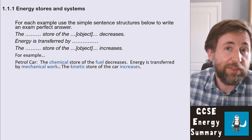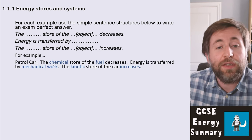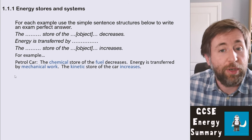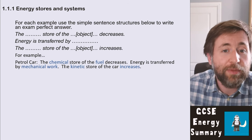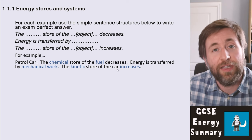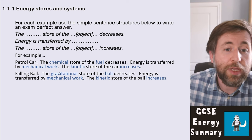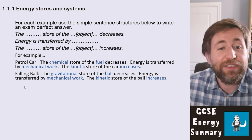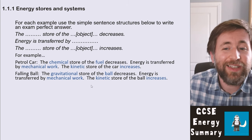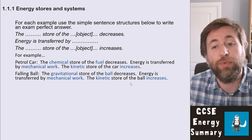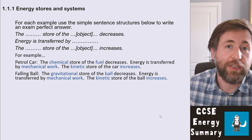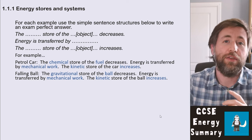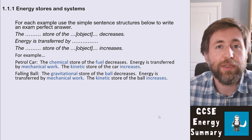For example, for a petrol car: the chemical store of the fuel decreases, the energy is transferred by mechanical work, and the kinetic store of the car increases. For a falling ball: the gravitational store of the ball decreases, energy is transferred by mechanical work, and the kinetic store of the ball increases. We've identified the starting store, the final store, and the way energy was transferred between them.